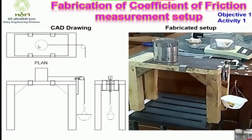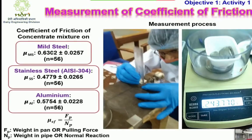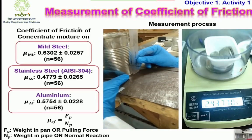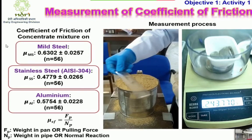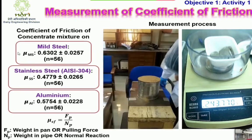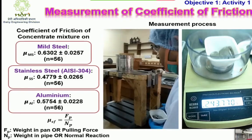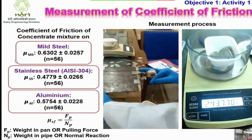For fabrication of the coefficient of friction setup, the CAD drawing was prepared and the setup was finally fabricated. The coefficient of friction of the concentrate mixture on mild steel, stainless steel, and aluminum was determined using this particular setup.